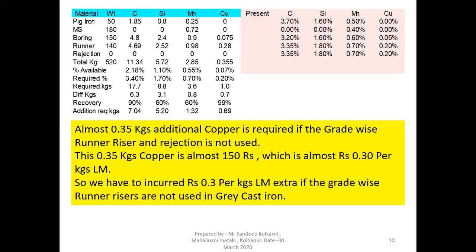Almost 0.3 rupees per kg of liquid metal extra cost is incurred because we have not used the higher grade risers for the higher grade of production. So it is very important to have this discipline in the melt shop — we must use grade-wise runner risers in gray cast iron for higher grade melting.